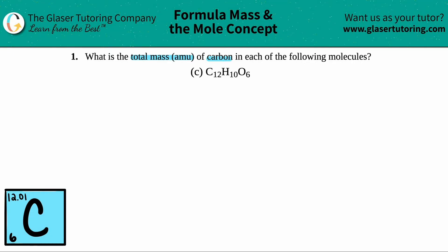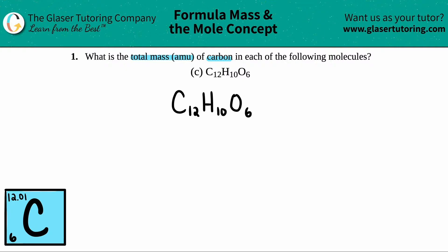The first thing I'm going to do is write this a little bit bigger, just so that I have more room to write on. The question is asking for the total mass of carbon. So the first thing is we have to figure out which element is carbon — this is just from memorizing what letters stand for what element. For carbon, it's always capital C. So that's carbon.